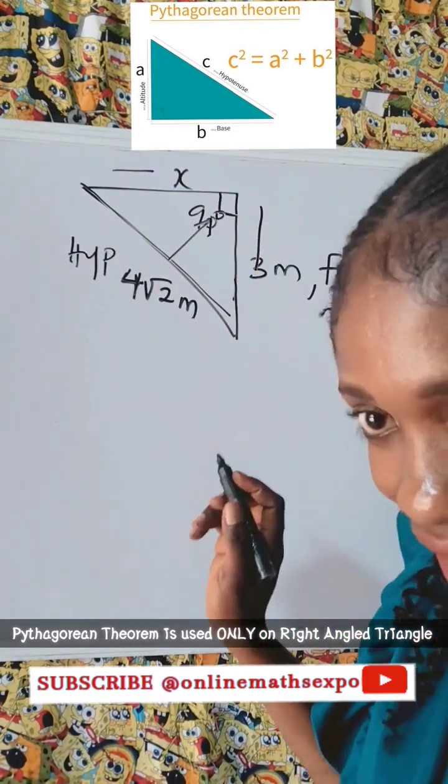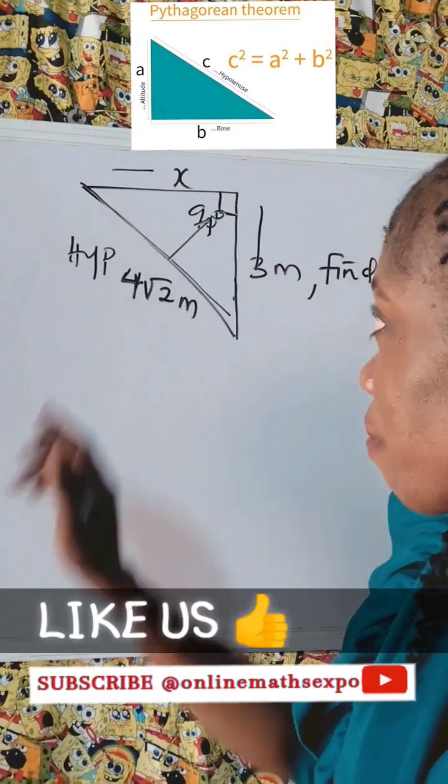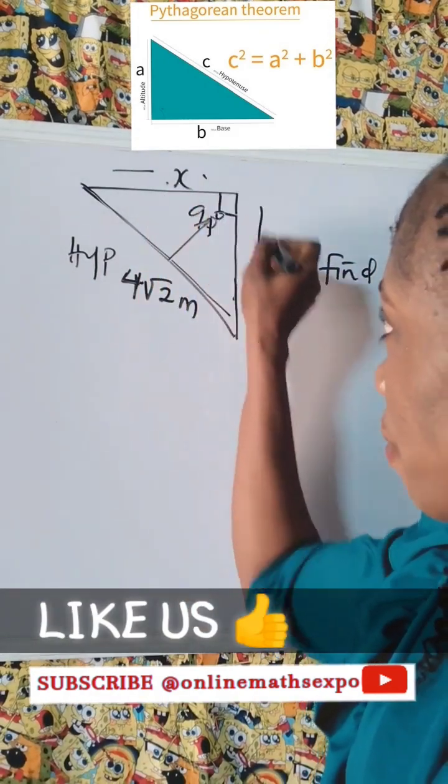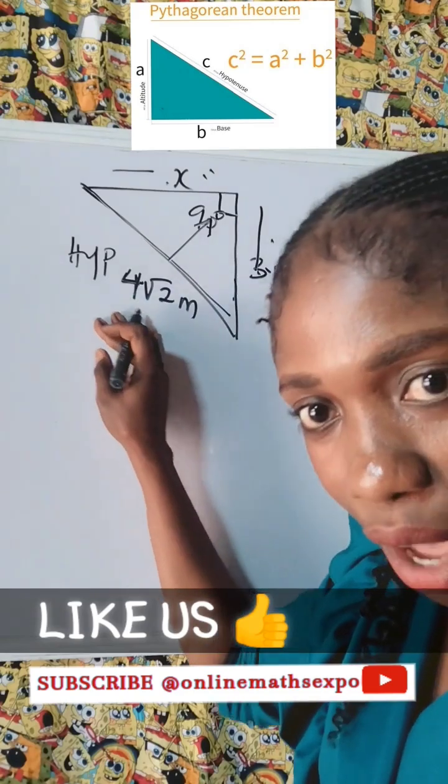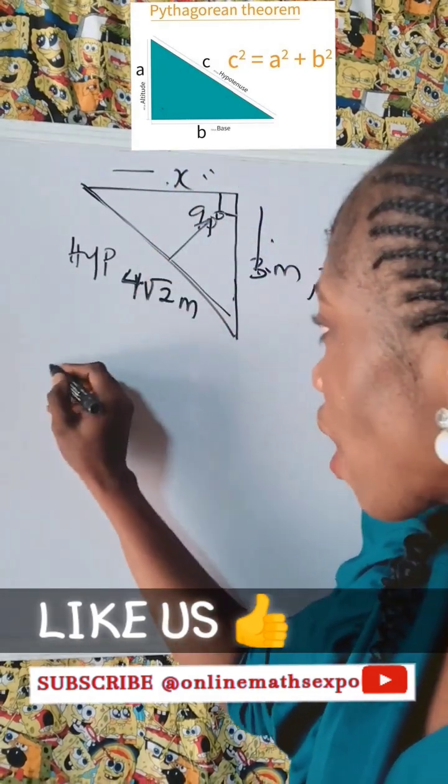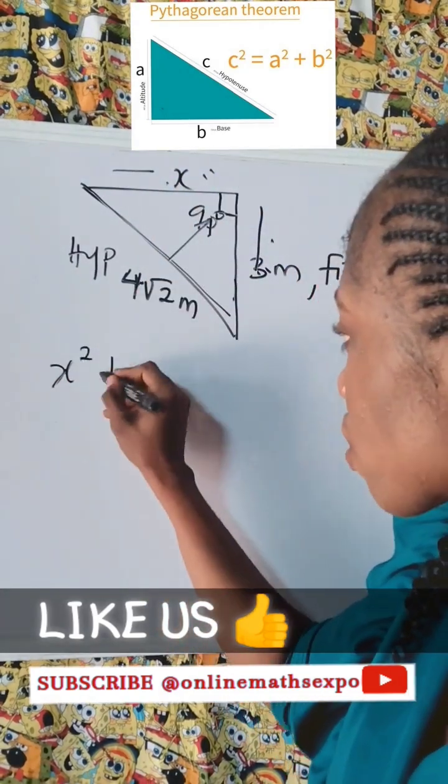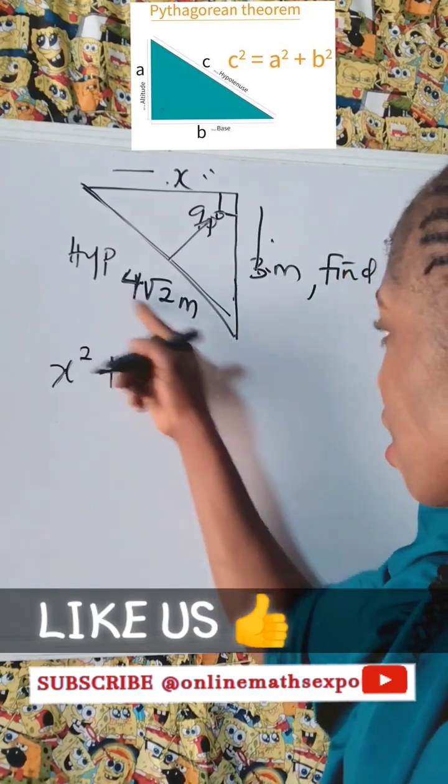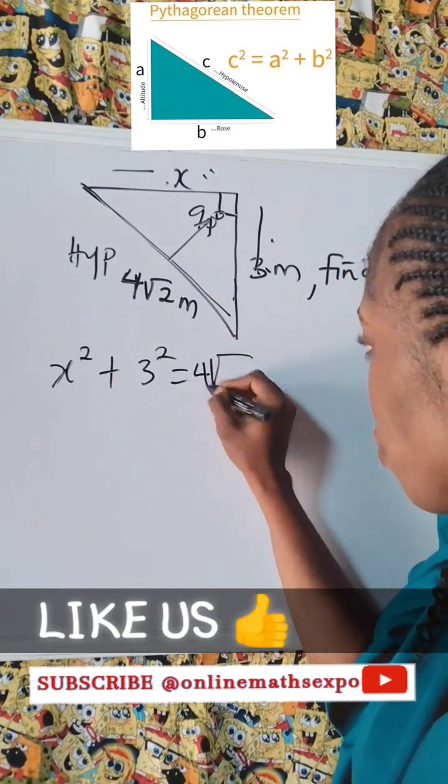And the remaining sides are this. So for Pythagoras theorem, the sum of the square of the remaining sides is equal to the square of the hypotenuse. So we are going to have x squared plus 3 squared is equal to the square of the hypotenuse.